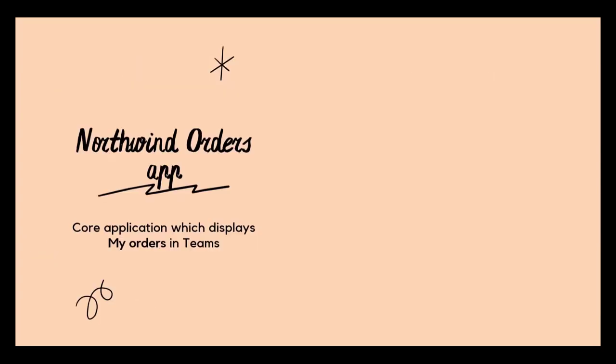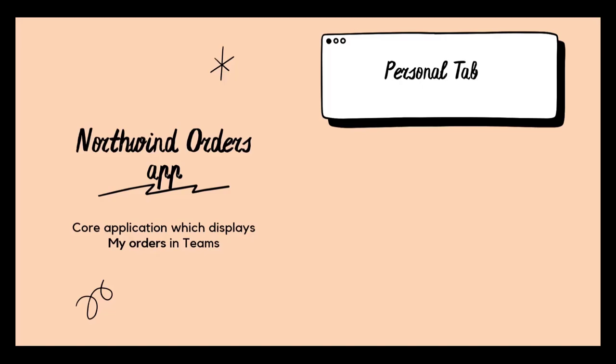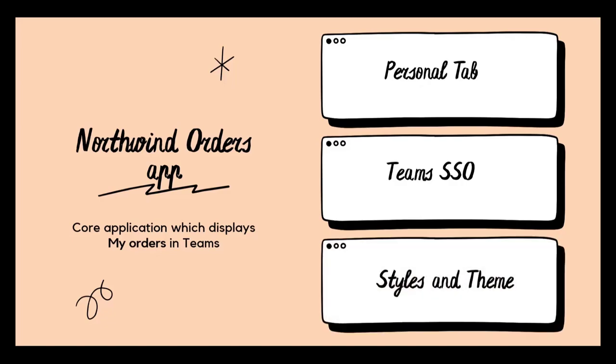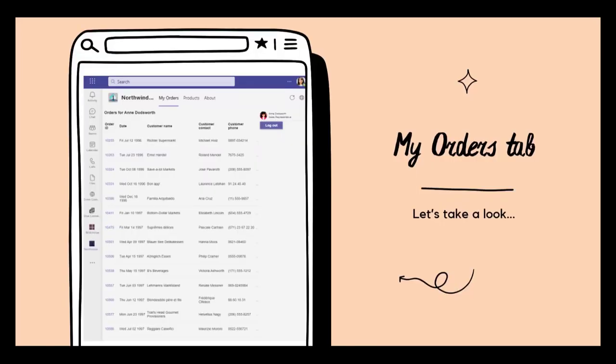Up to this point of the lab, you have created the core application Northwind Orders app, which is a personal tab that uses Teams SSO and styling, which retrieves your orders and displays them for you in the My Orders tab. Now, let's extend the application by adding additional capability. In this lab, we will add a message extension to our existing Teams app.